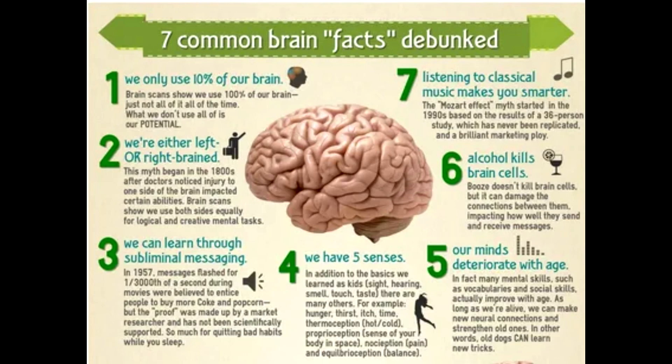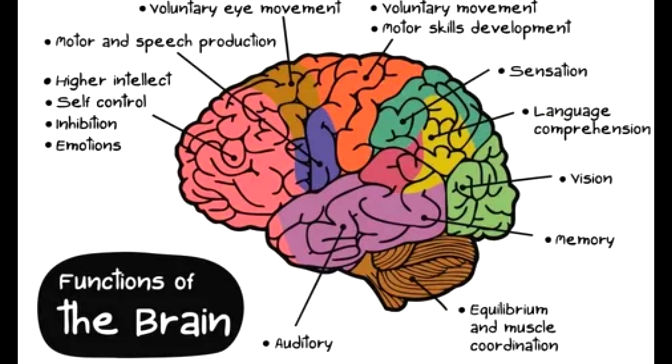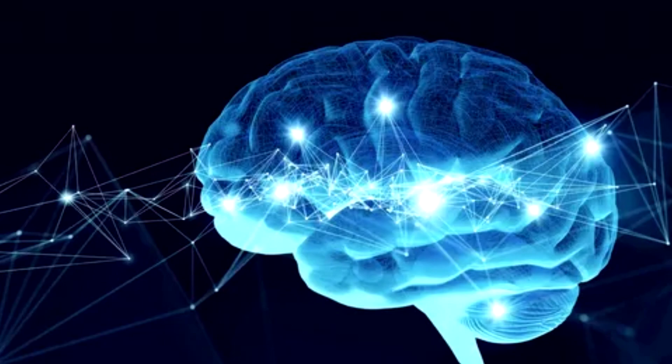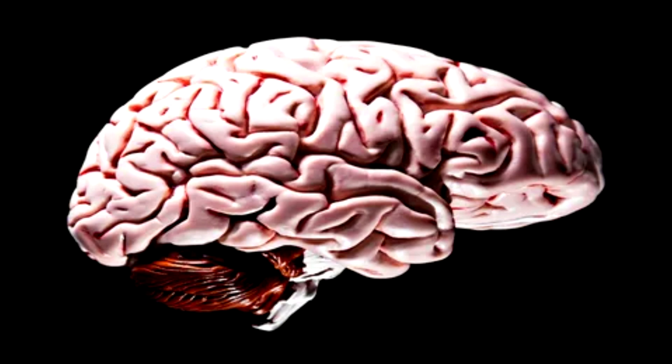Astrocytes, for example, appear to nurture neurons so that they can keep working properly. Microglia serve as immune cells, attacking foreign invaders and pruning some of the branches on neurons to improve their signaling. And the researchers found many new types of these cells as well.